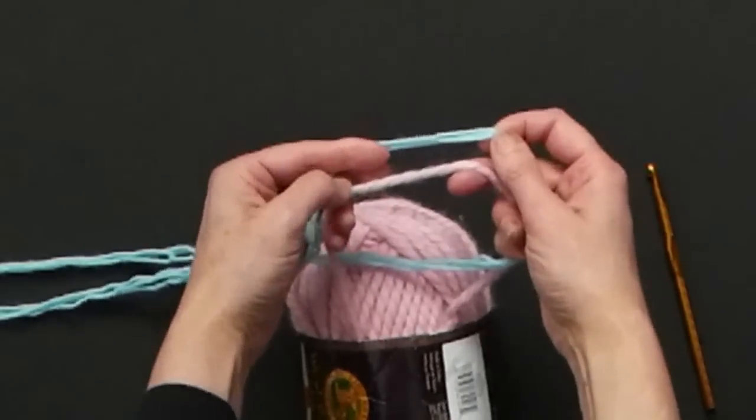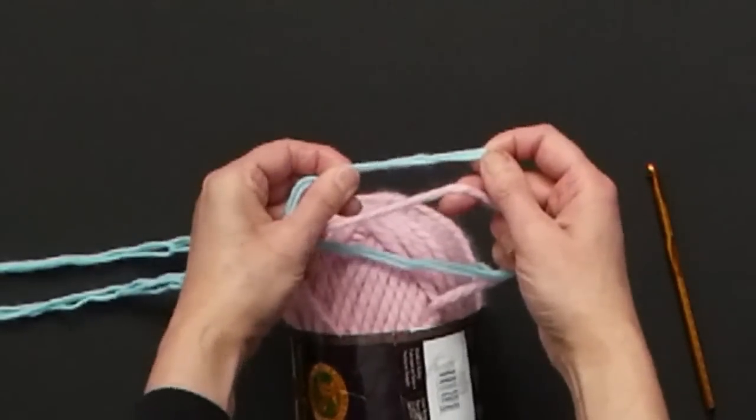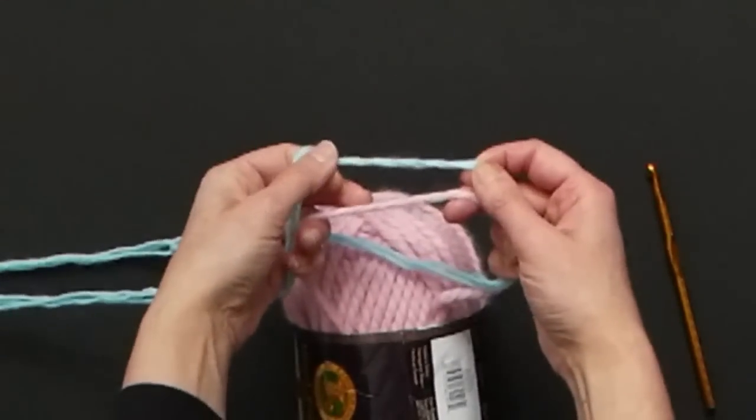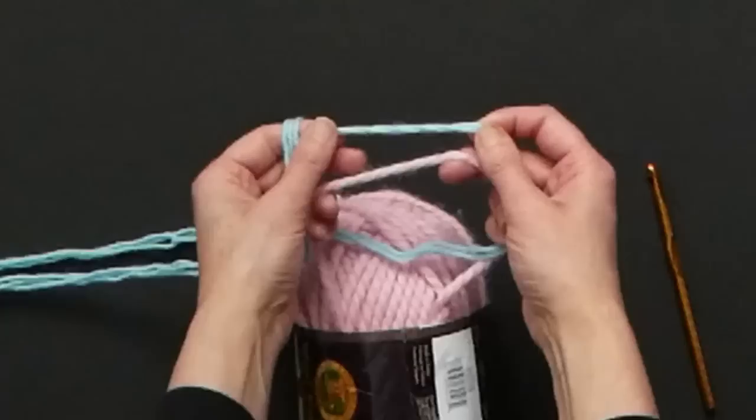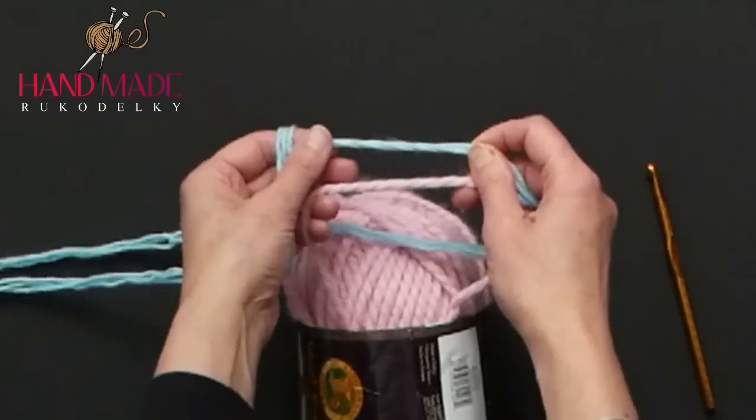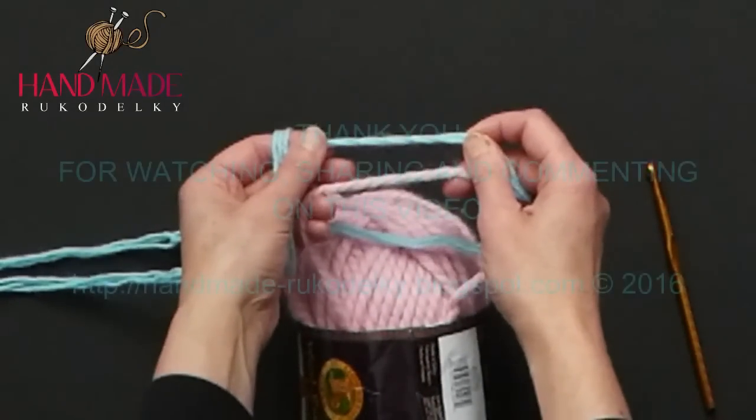So as you see, I turned DK yarn, which is number 3 in thickness, to number 6 super bulky yarn. And I want to thank you very much for watching. And I will see you another time.